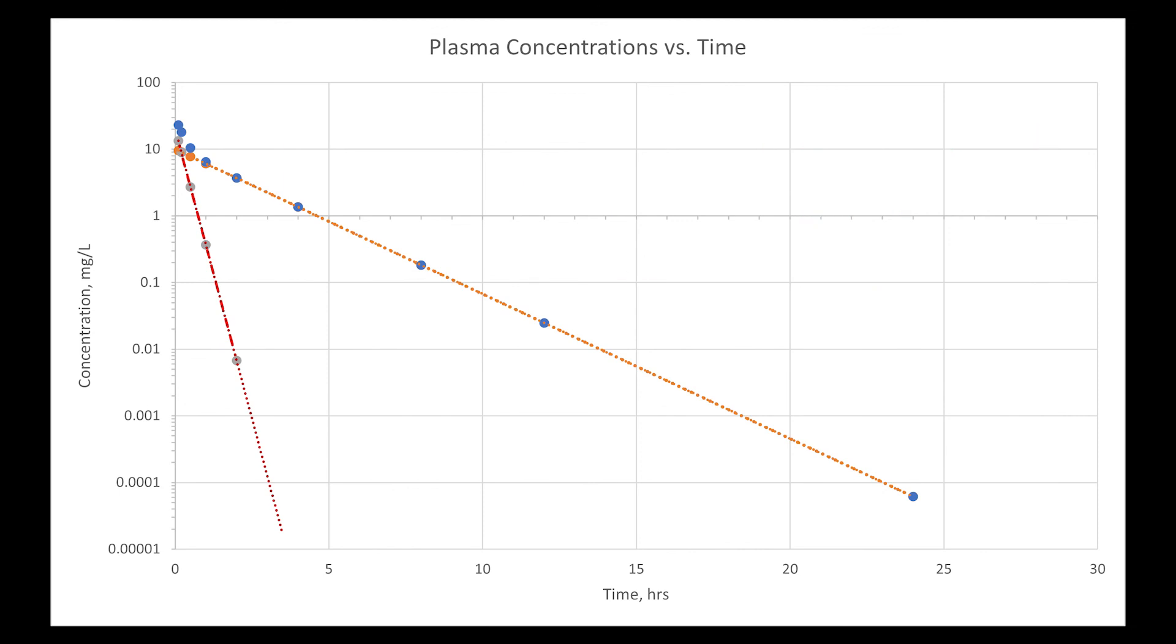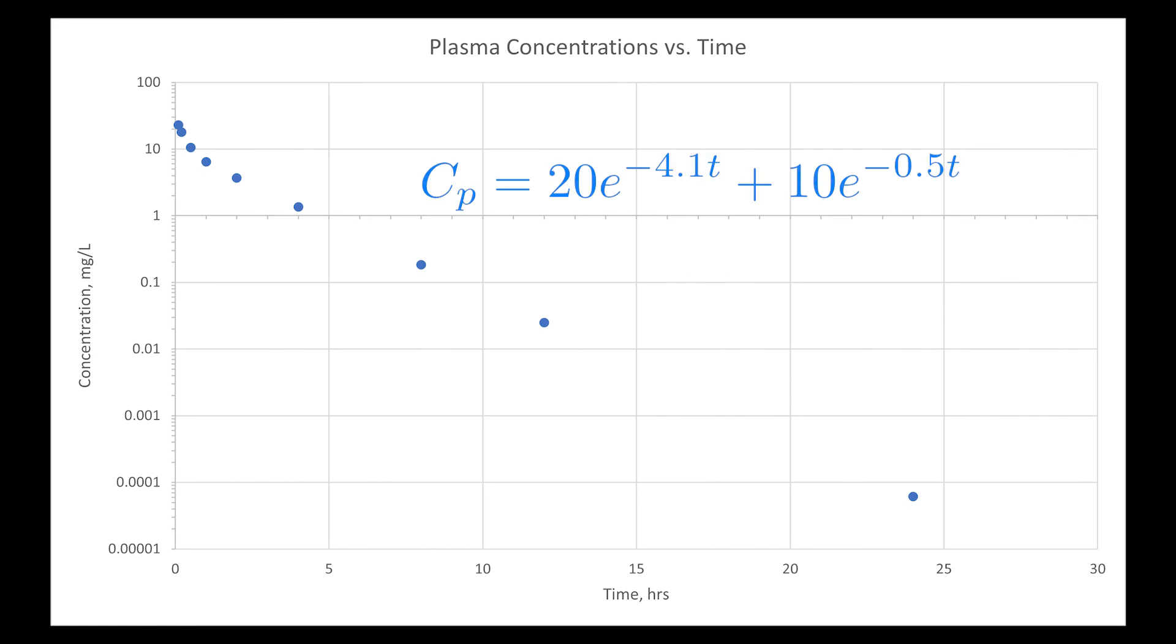So now we just combine all of our constants together and we get an equation of Cp equals 20 times e to the negative 4.1 t plus 10 times e to the negative 0.5 t. Thanks for watching.